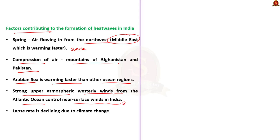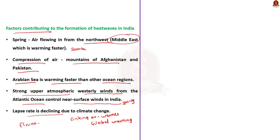Strong upper atmospheric westerly winds from the Atlantic Ocean control near-surface winds in India during spring. When winds move from west to east faster than the Earth's rotation, the descending air compresses and warms up, contributing to heat wave formation. Under global warming, the lapse rate — the rate at which air cools from the surface to the upper atmosphere — is declining. This means the upper atmosphere warms faster than the surface. As a result, sinking air becomes warmer and generates heat waves. These processes explain why heat waves that used to occur once in a decade are now happening more frequently and more intensely. The area affected is also influenced by El Niño and La Niña events.